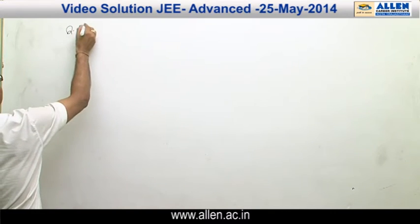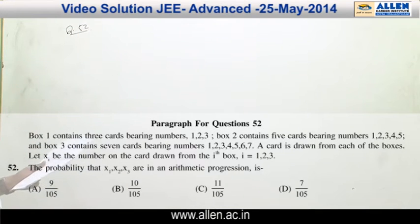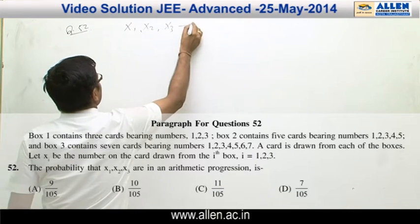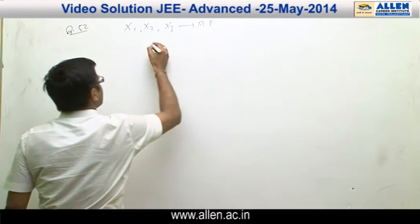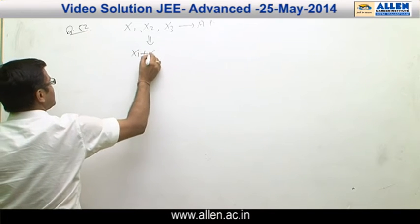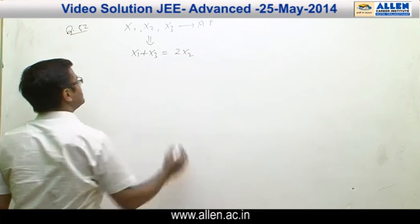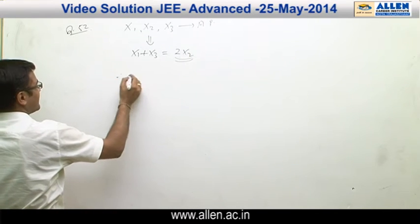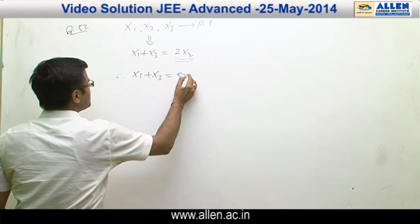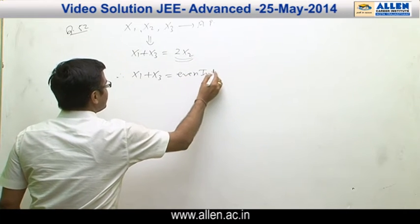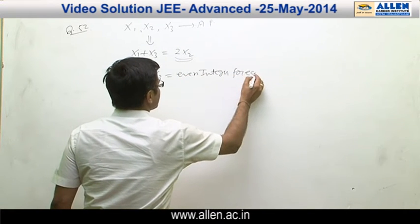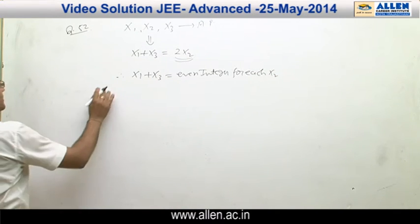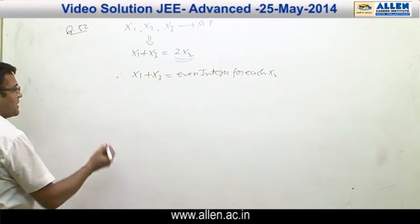Question number 52. Now we have to find the probability that X1, X2, X3 are in AP. X1, X2, X3 are in AP means X1 + X3 = 2X2. That means 2X2 is an even integer, so we can write X1 + X3 equals an even integer for each X2. The sum of 2 numbers becomes even in 2 cases only: when both numbers are even, and when both numbers are odd.